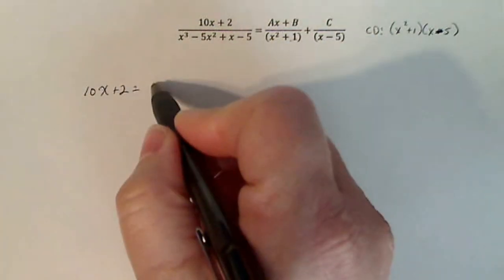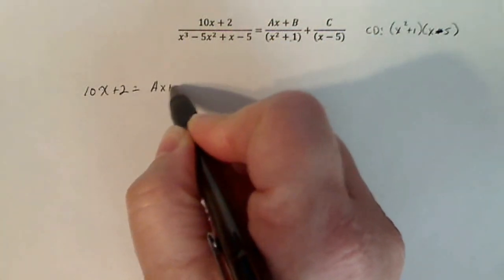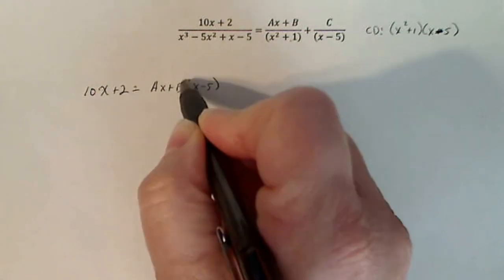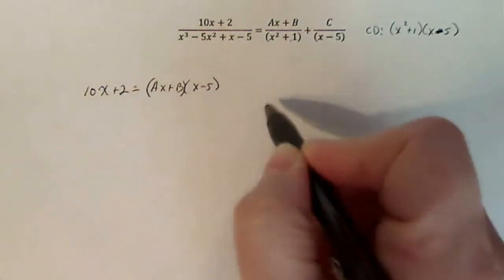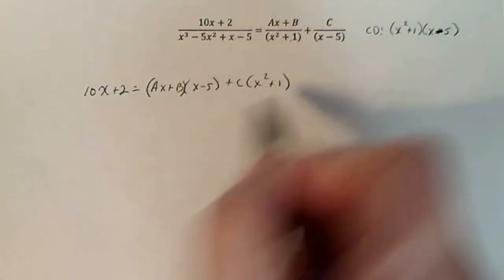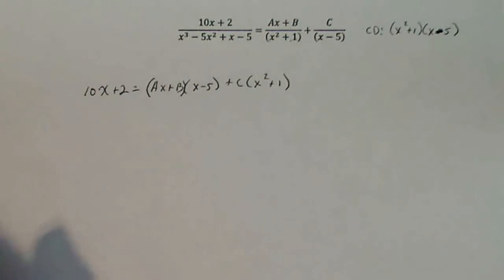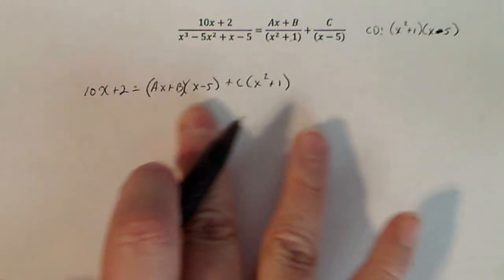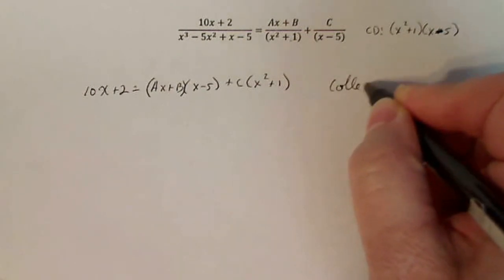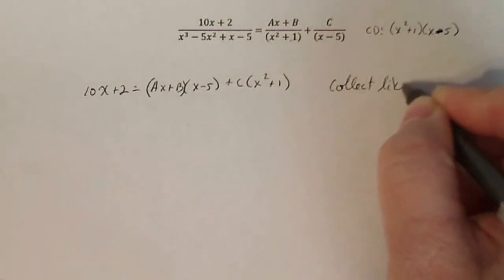On this side, I'll have ax plus b times x minus five, and let's use our parentheses properly so it works out plus c times x squared plus one. Okay, now what you do is you multiply out everything on this side and you collect like terms.